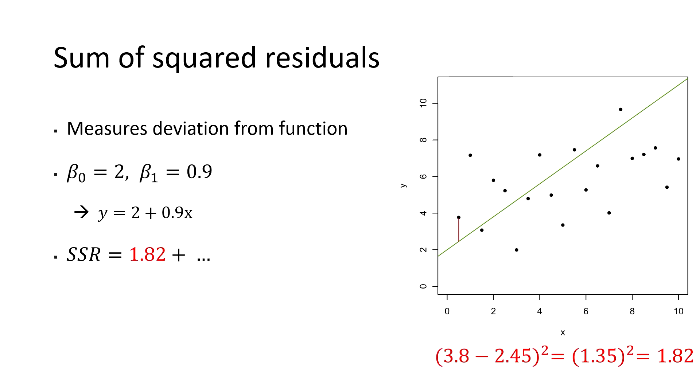In the first step we calculate how much the y value of the first observation deviates from the y value of the function at the same x value. This deviation is called the residual. In this case we get a value of 1.35 which is indicated by the red line in the plot. If we now square this value we end up with 1.82 as the first squared residual. Then we do the same for the second observation. In this case we get a residual of 4.3 which results in a squared residual of 18.49. We then add this value to our previously calculated value of 1.82 since we want the sum of all squared residuals.